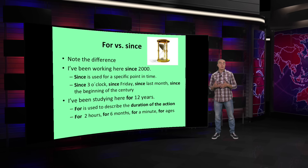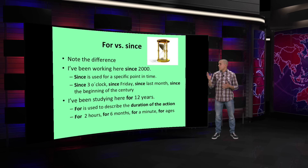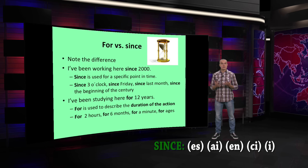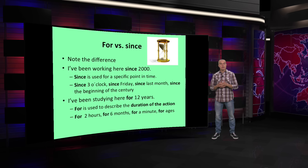We have been practicing this since we started. For example, you can notice that I'm using SINCE. And SINCE, which is S for sun, I for igloo, N for Nancy or November — you build that alphabet, your international phonetic alphabet, you build it your own. C for car and E for elephant.